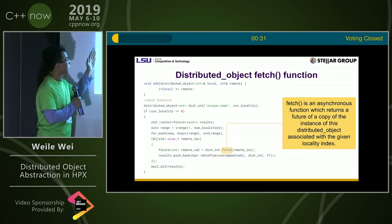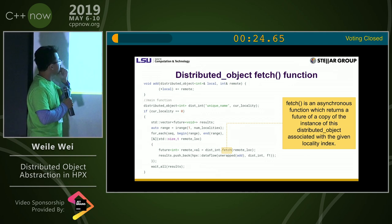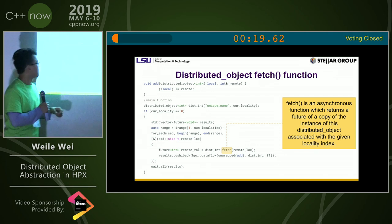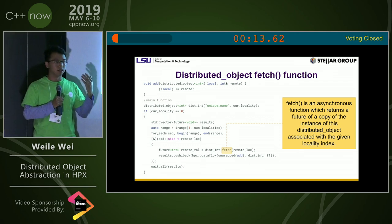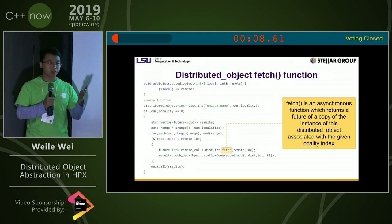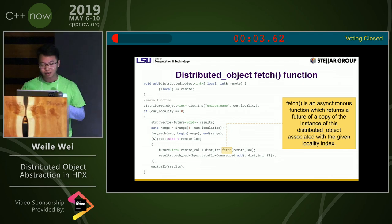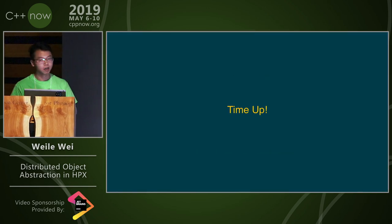For each, using the sequential execution policy, we get a pointer, get a remote locality index, and fetch it. The data flow is that once the function input parameters are ready, it will execute the add function. That's pretty much what I prepared. You can also target some sub-localities. Thank you.